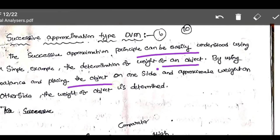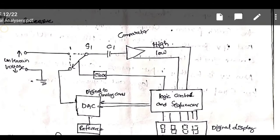By using a balance and placing the object on one side and an approximate weight on the other side, the weight of the object to be determined — that is the principle we are using. How we are measuring the weight of apples or mangoes or fruits: by taking a kg stone on one side and providing fruits on the other side, then comparing. After that the merchant will give to you by comparing the weight.